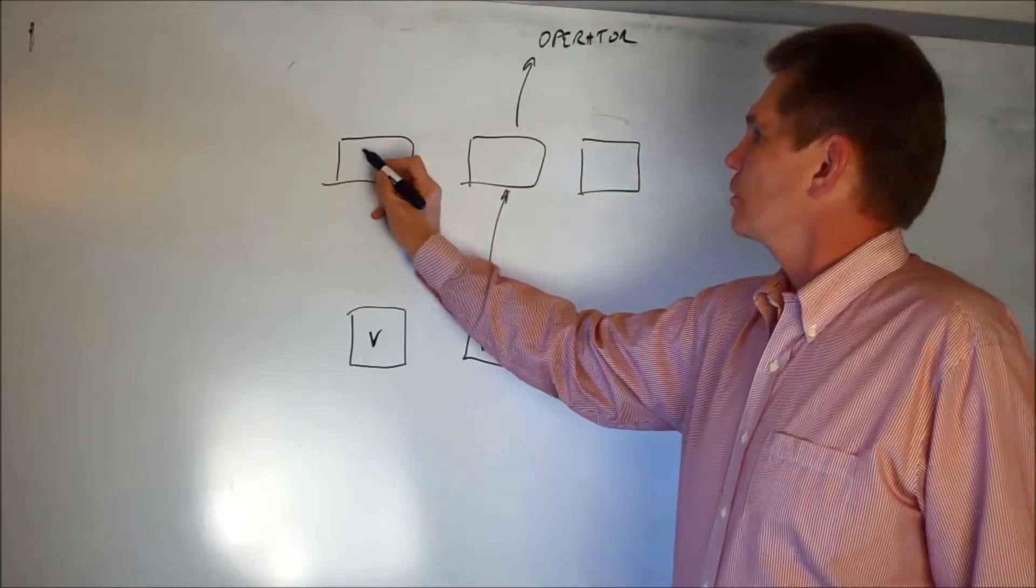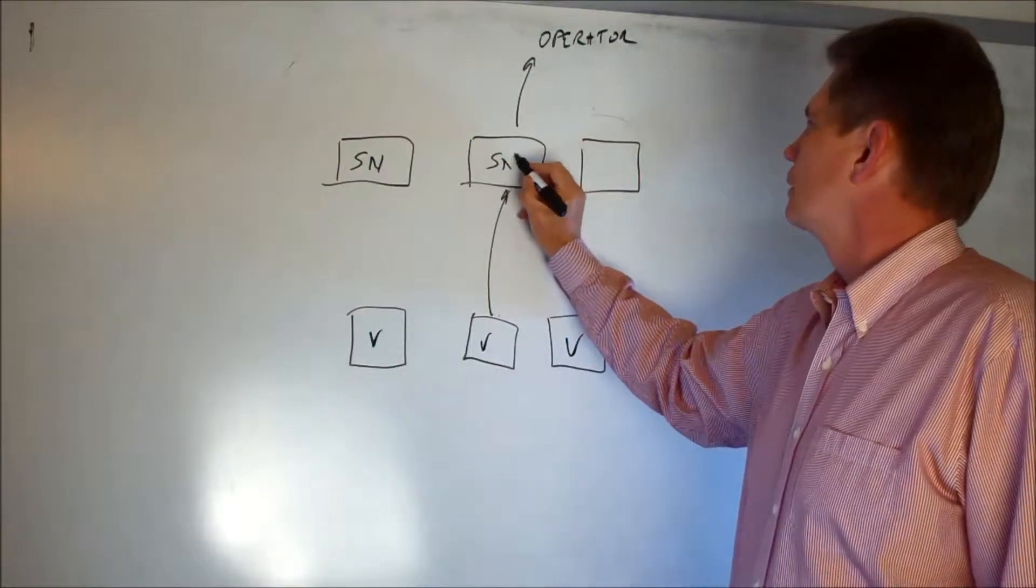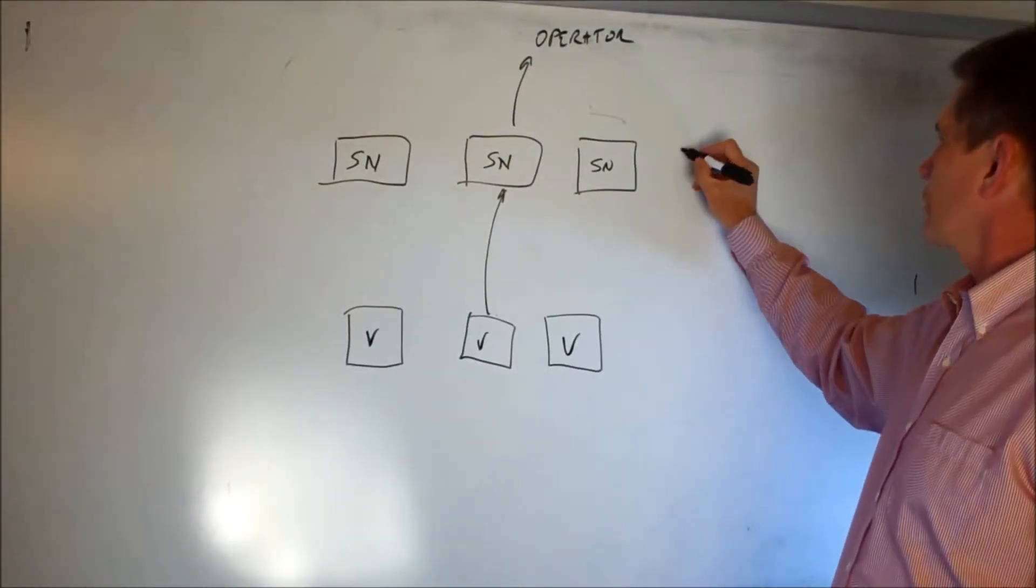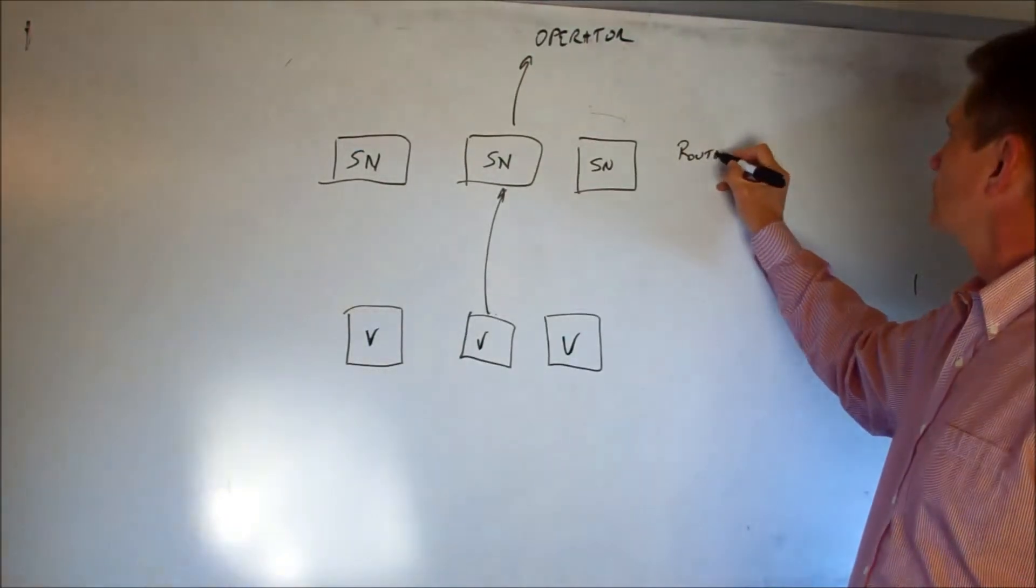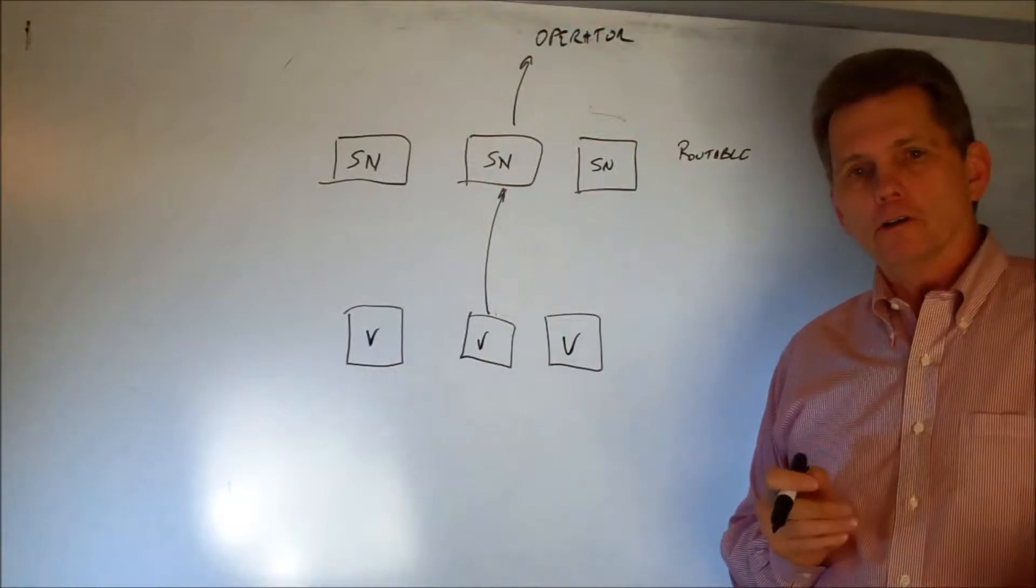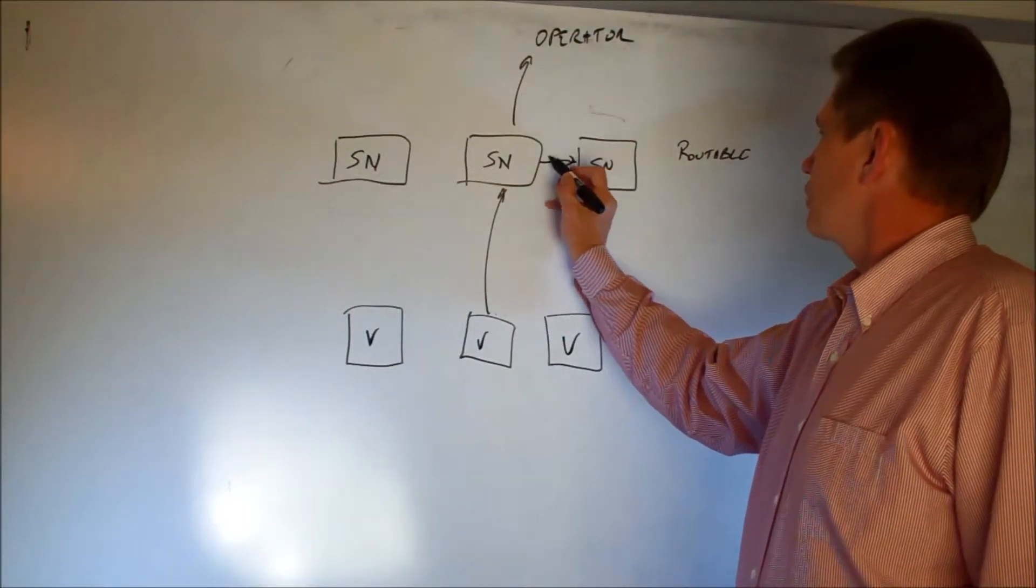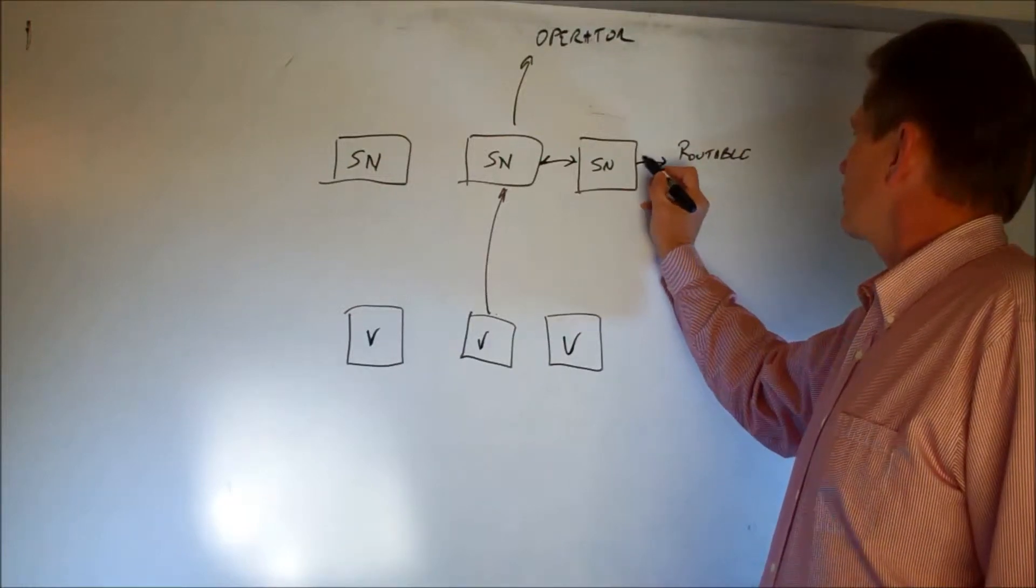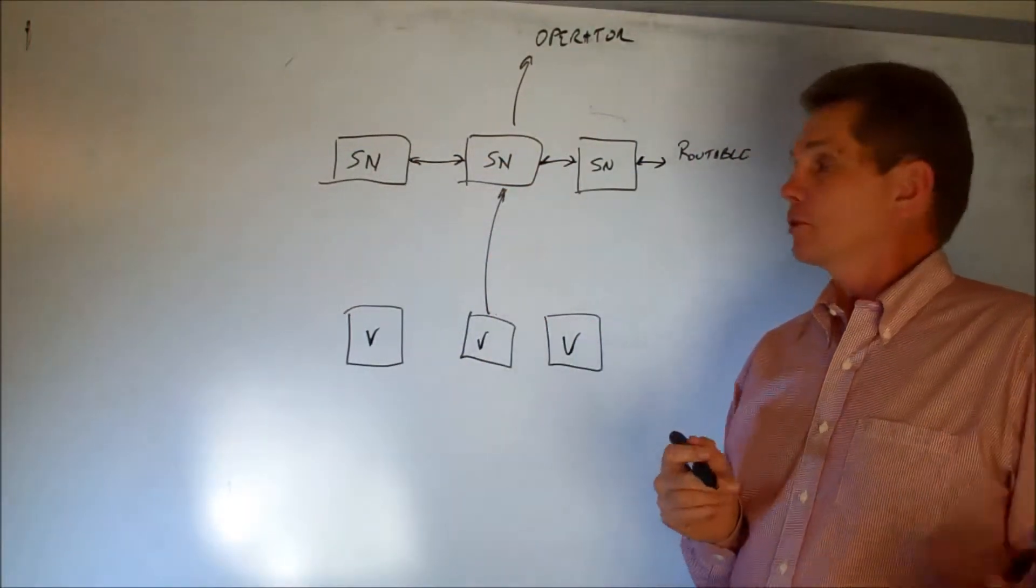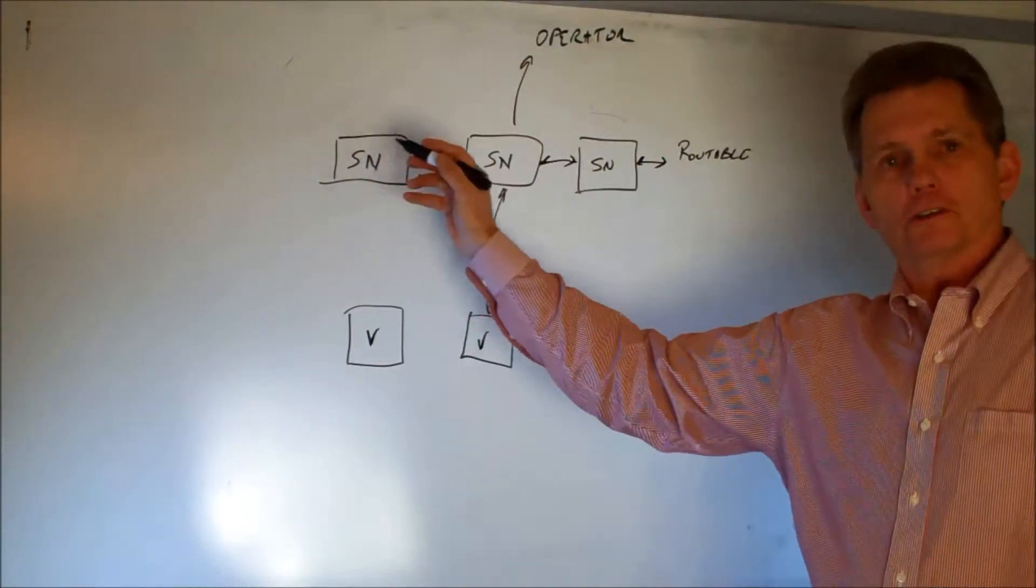One is what are typically called super nodes. And the super nodes are, another way to think about these as being routable nodes. They are outside of firewalls, not behind a NAT, and they can both accept and receive commands at all times, so that whenever they're up, they're connected to the network, and they're always sharing commands back and forth across this distribution network.